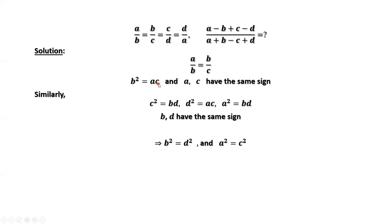B squared equals AC and D squared equals AC, this implies B squared equals D squared. C squared equals BD and A squared equals BD, this implies A squared equals C squared.